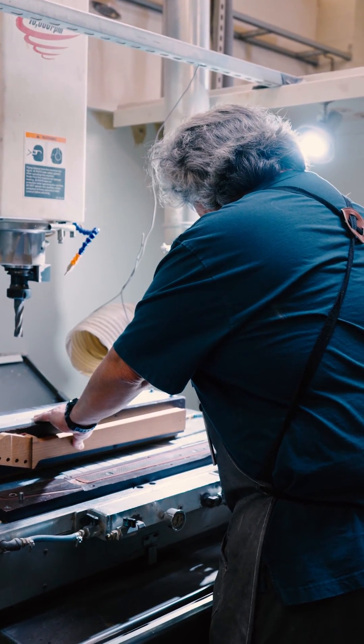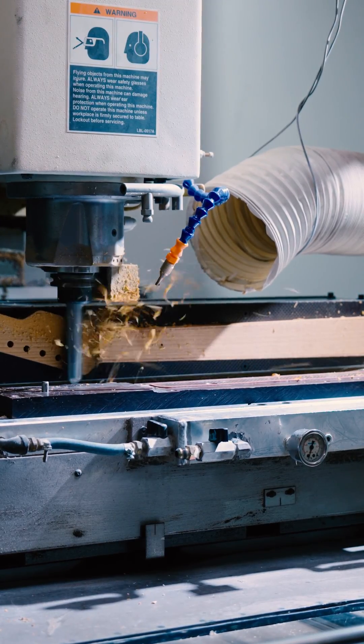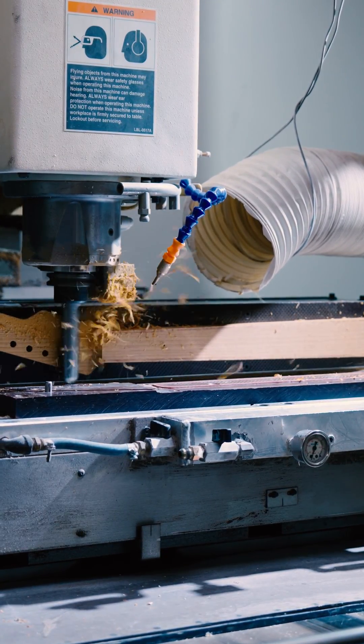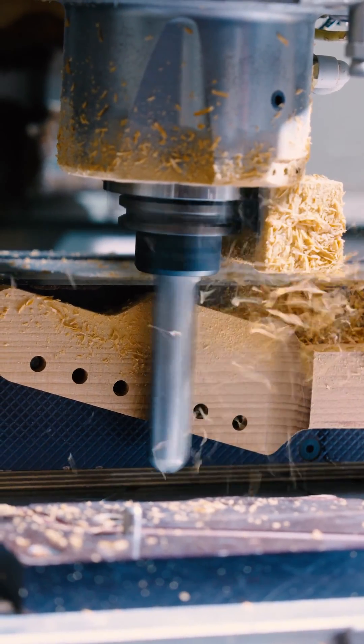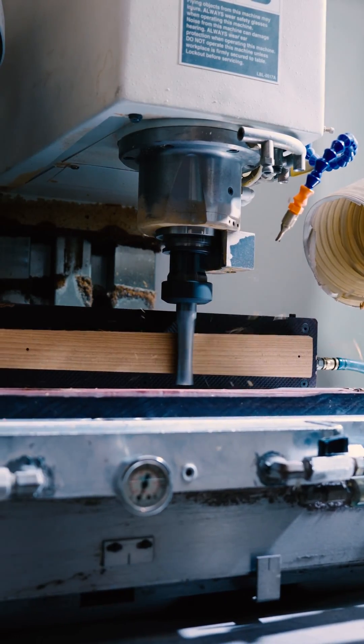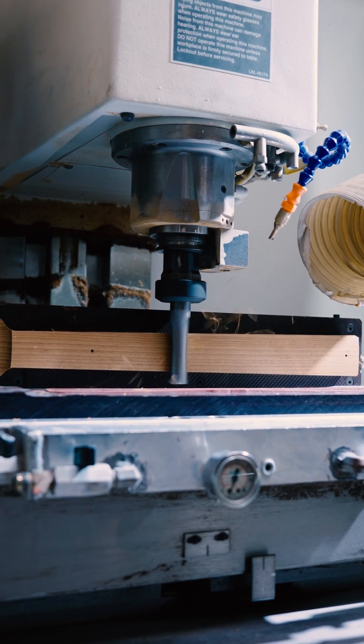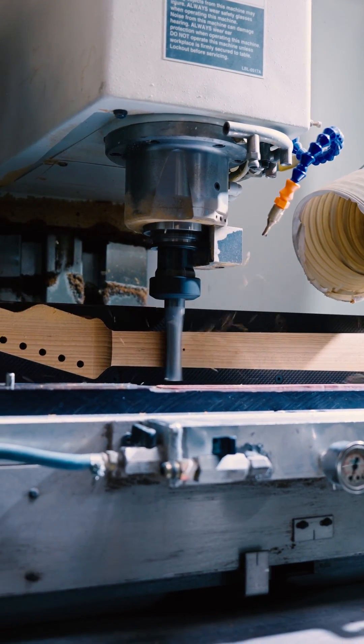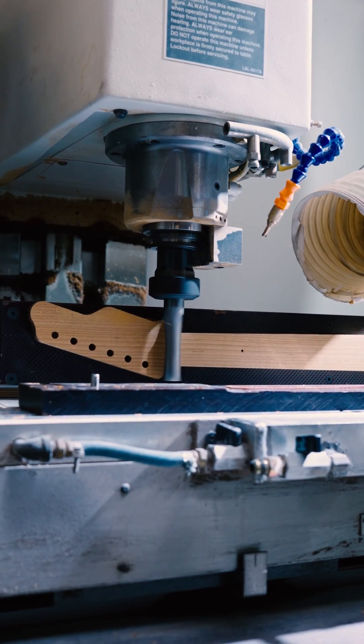First, we put it on our right angle jig to scoop the headstock and radius the fretboard. So here we have a scooped headstock and a pre-radius fretboard before we take it to the swing machine. 12 inch radius prior to it going to the swing machine to be compound radius.